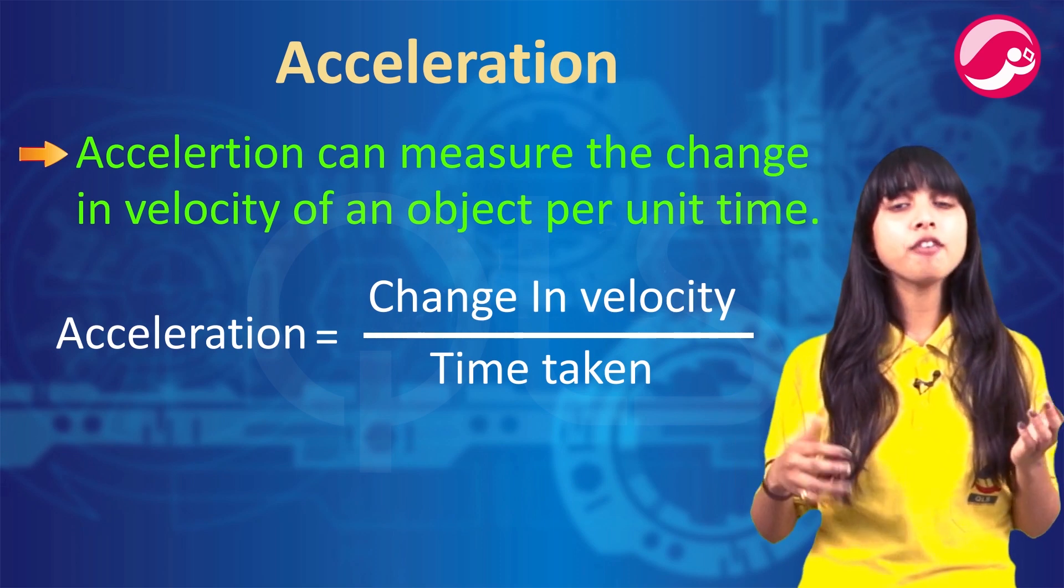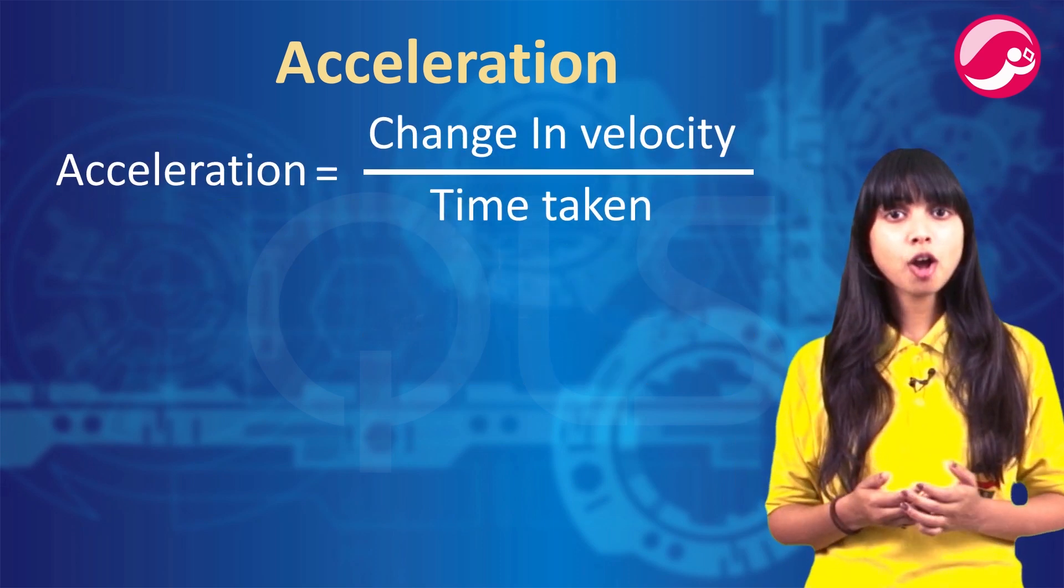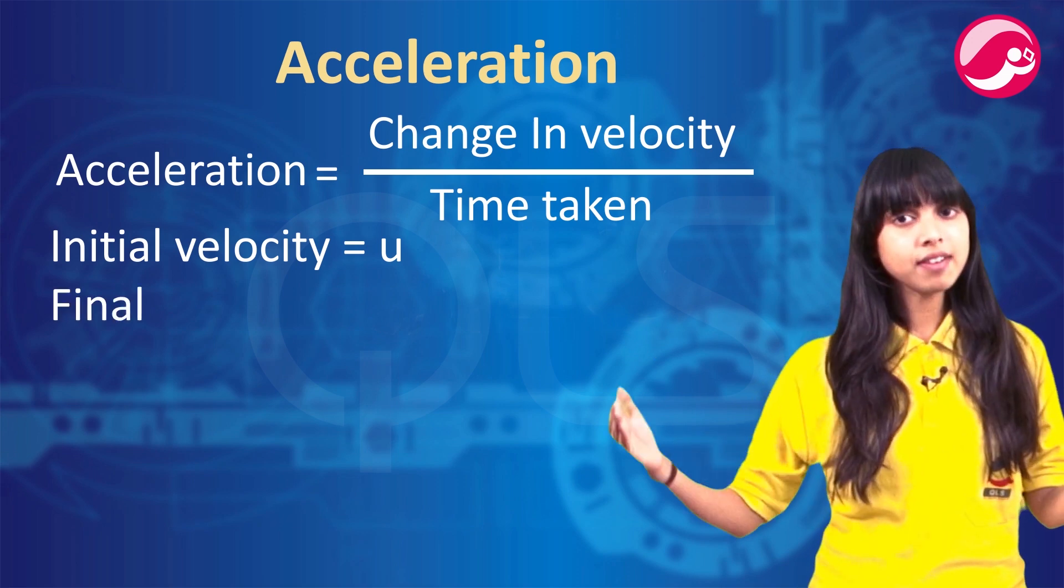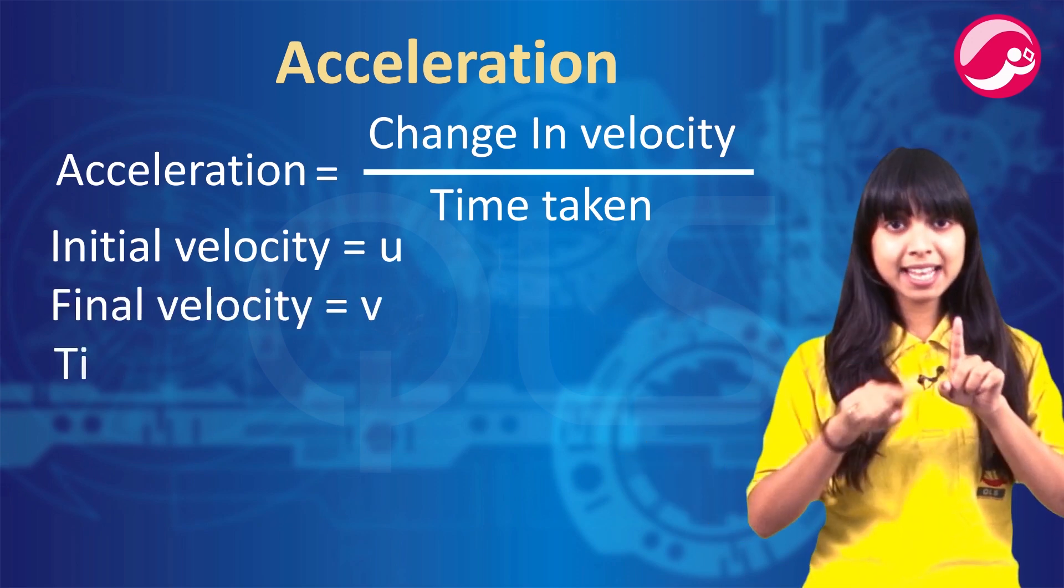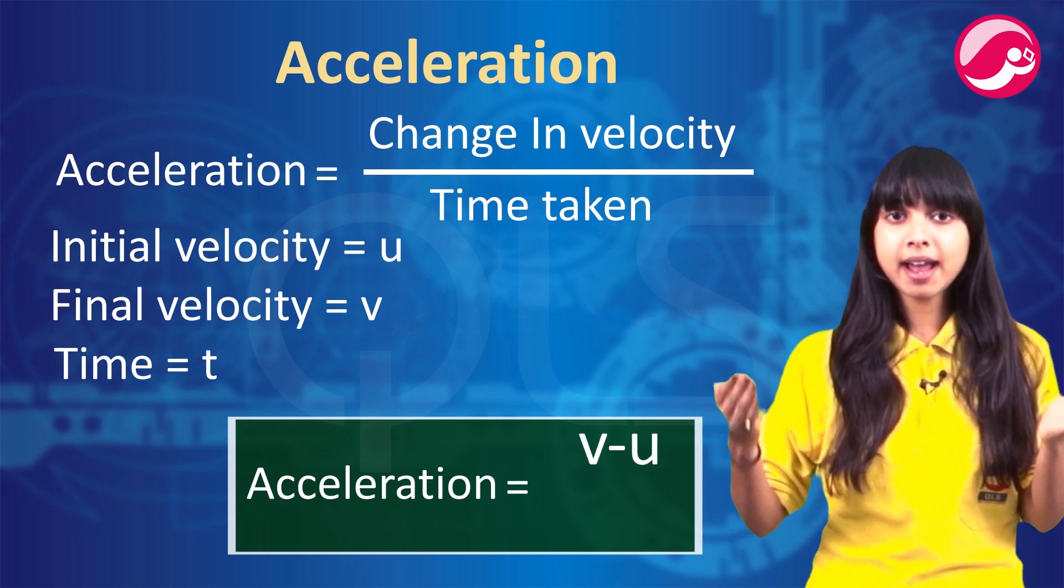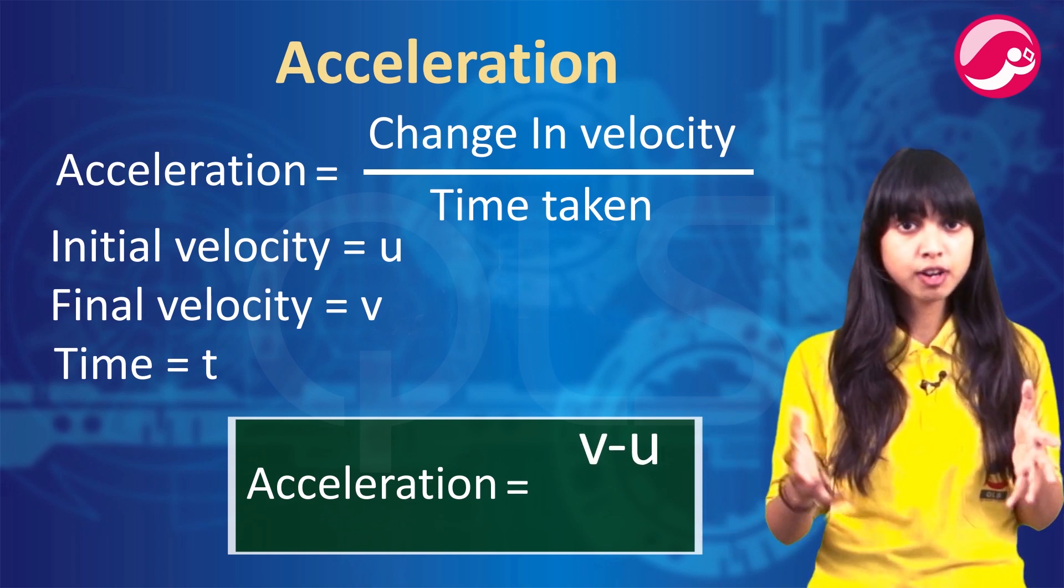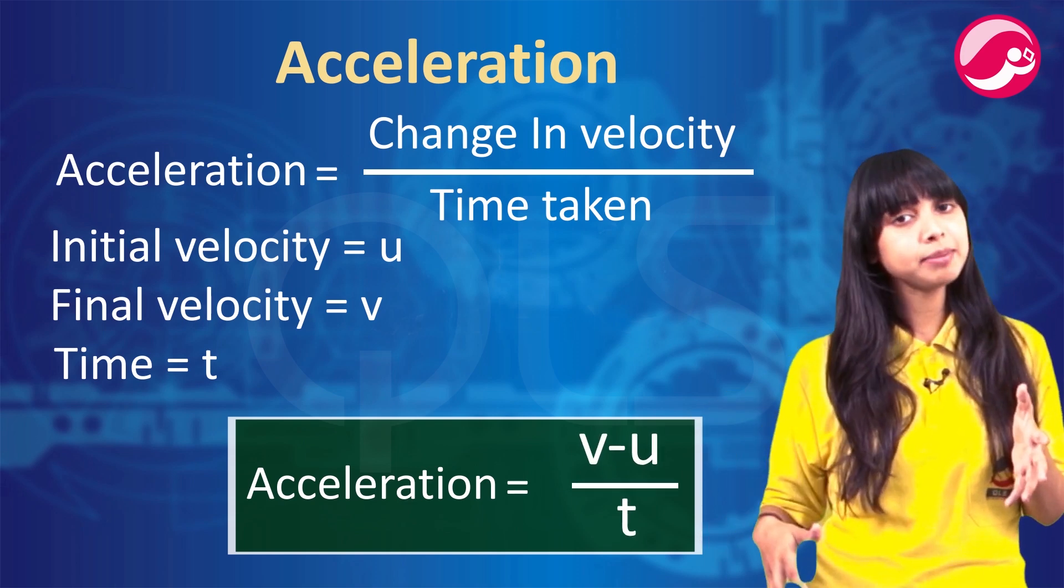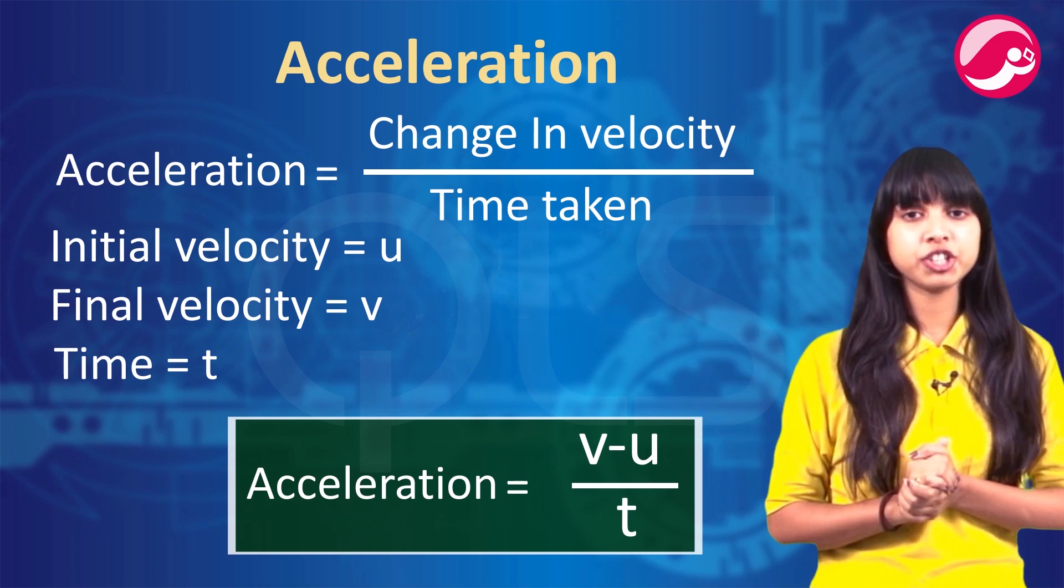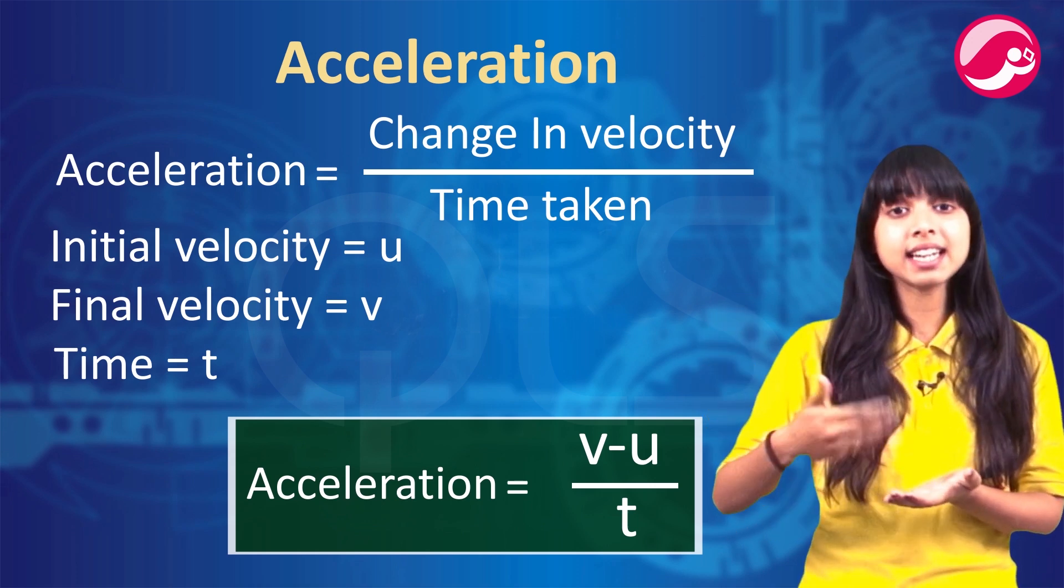If the velocity of an object changes from initial velocity u to the final velocity v in time t, then acceleration is equal to v minus u upon time taken t. So this is the formula. This kind of motion is known as accelerated motion.